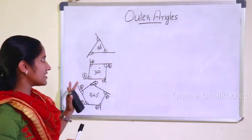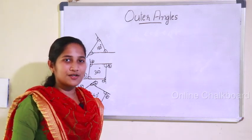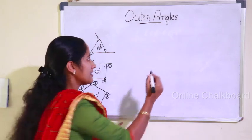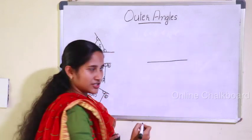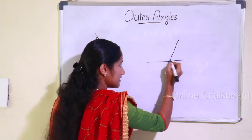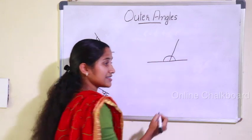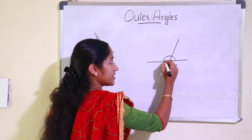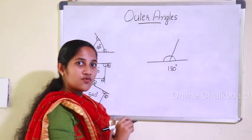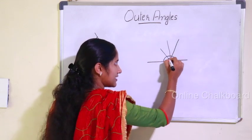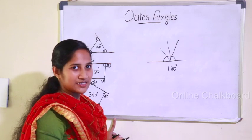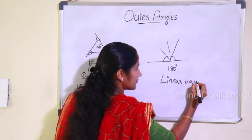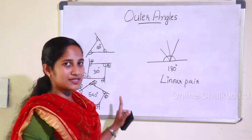If we look at the concept of a linear pair, we look at this line. If a line is drawn from another line, then the sum of the angles on either side is 180 degrees. The sum of a linear pair is always 180 degrees. This concept applies to what we call the outer triangle.